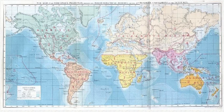Biogeography is the study of the distribution of species and ecosystems in geographic space and through geological time. Organisms and biological communities often vary in a regular fashion along geographic gradients of latitude, elevation, isolation and habitat area.